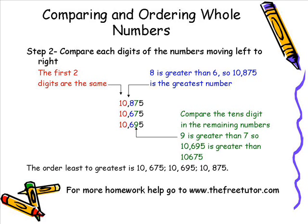So by implementing this method we have solved our math problem. In order from least to greatest the numbers are 10,675, 10,695, and 10,875.